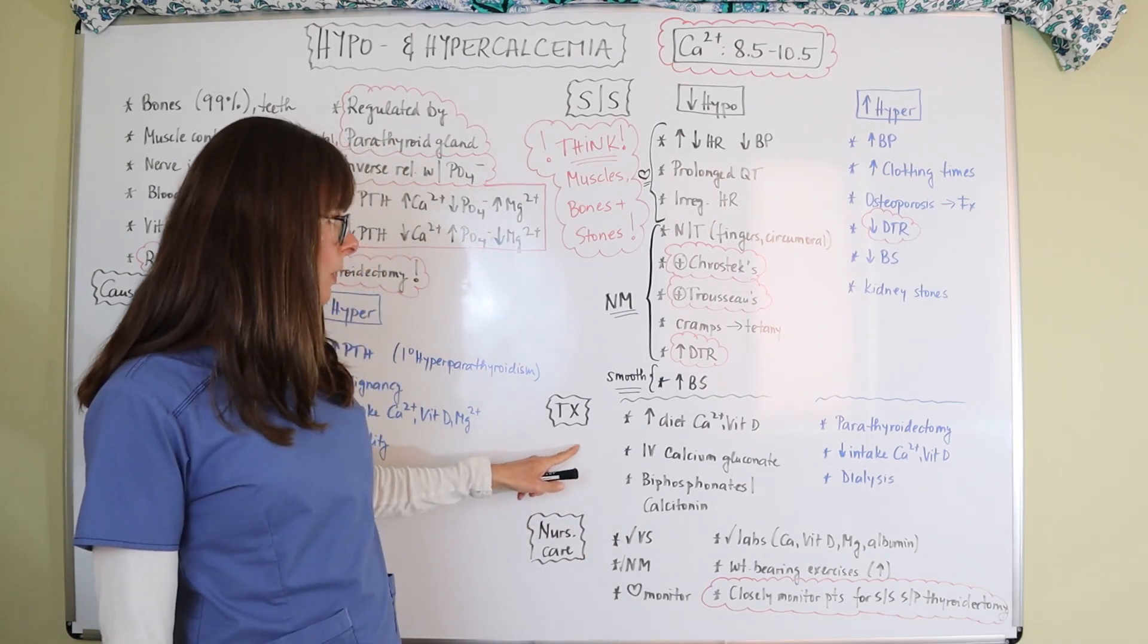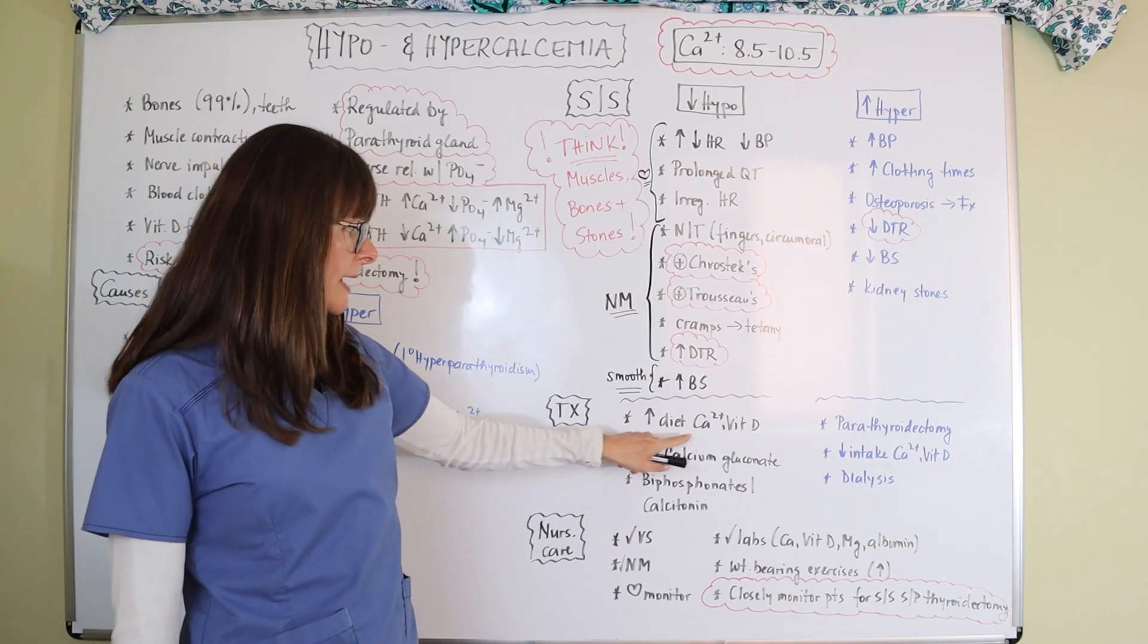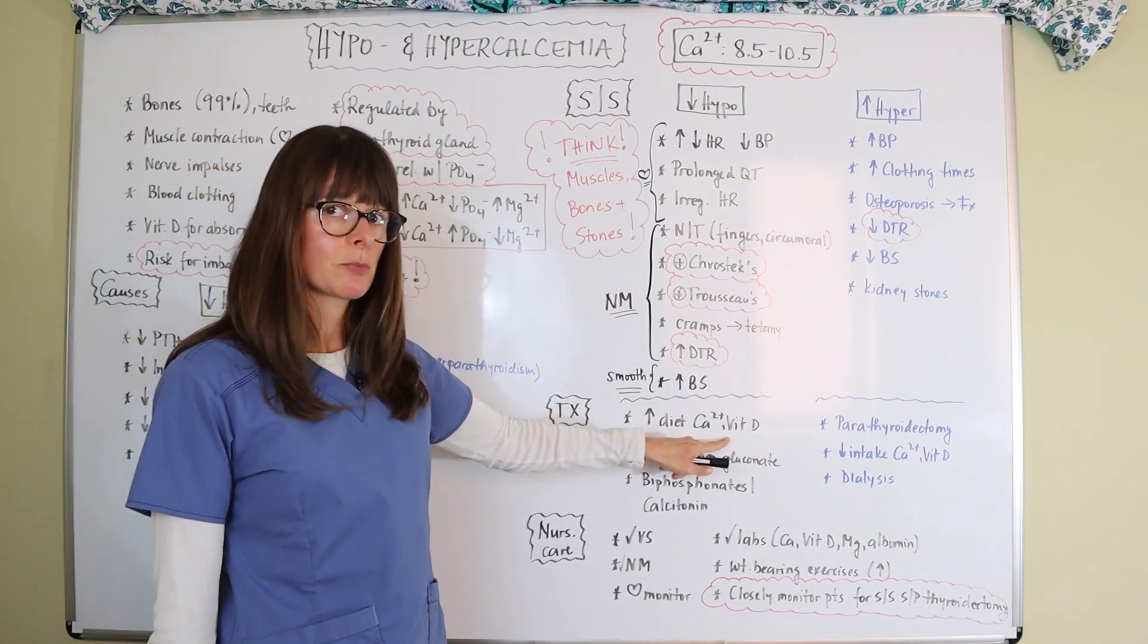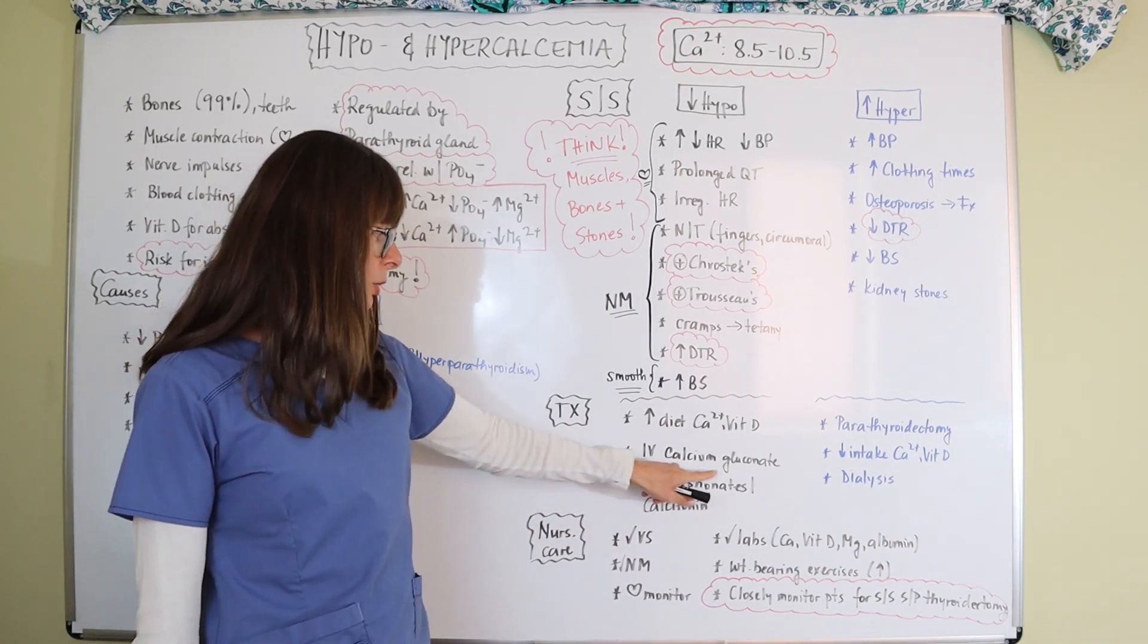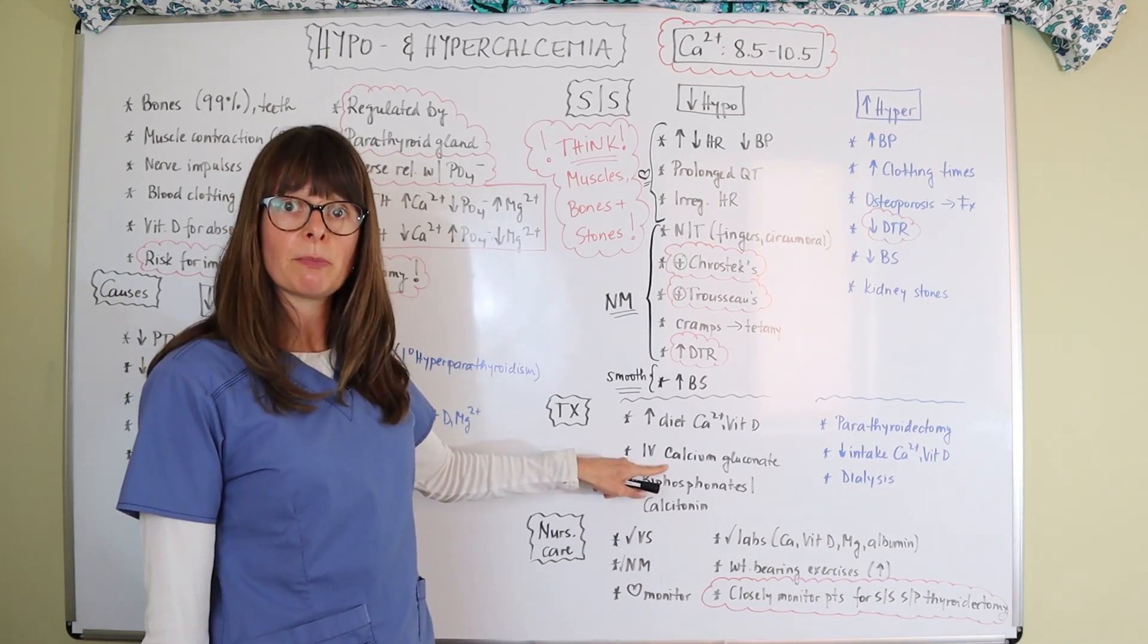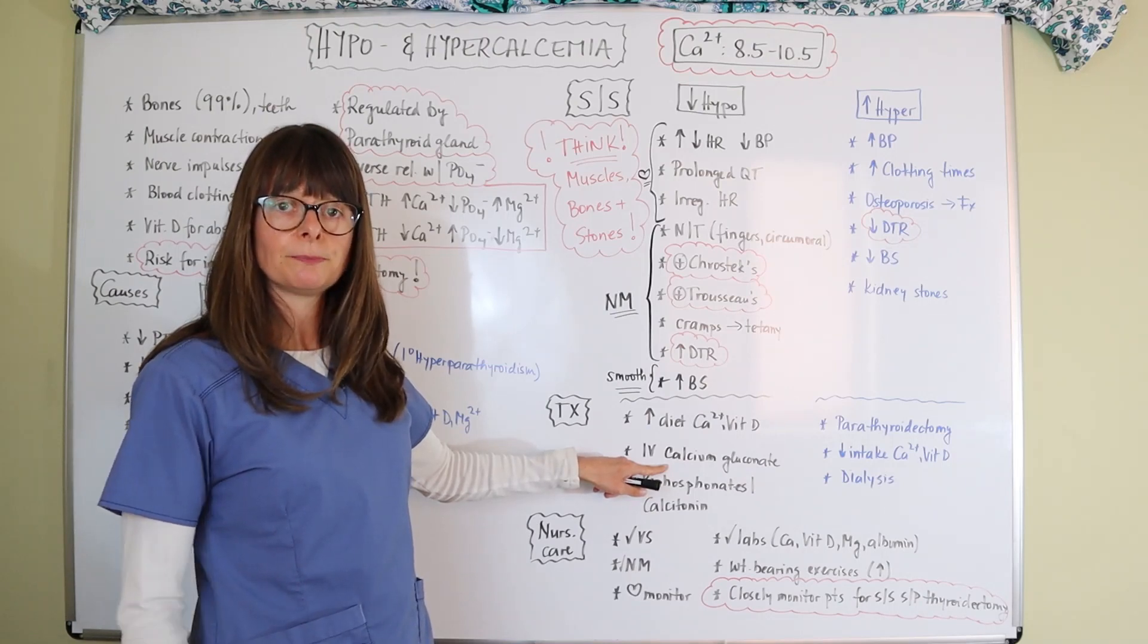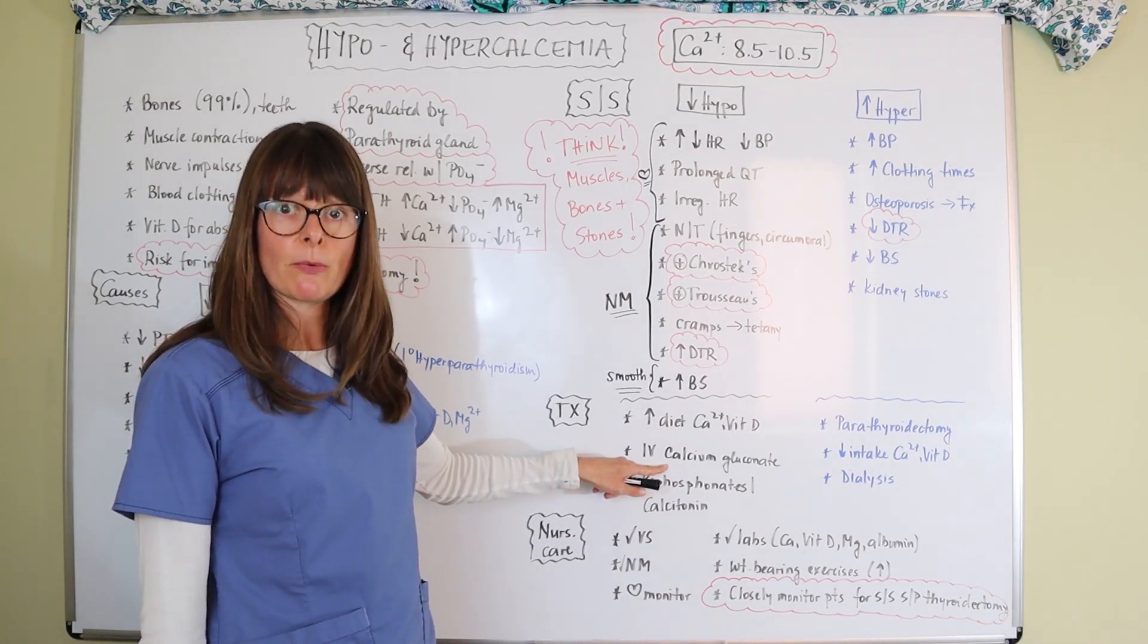And then for treatment, so what do we do? If the calcium level is low, we recommend an increase in the diet of calcium as well as vitamin D because without vitamin D we can't absorb the calcium. In severe cases, we might need to administer IV calcium gluconate and as always with electrolyte administration, make sure you have the patient on the cardiac monitor and that you observe and check very diligently with your pharmacy about the maximum rate of infusion.